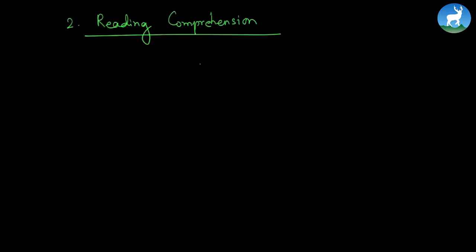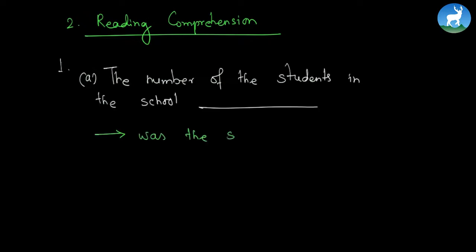Now let us go to the reading comprehension part. The first question is: the number of students in the school — the options are changed rapidly, changed only in a few years, or was the same all years. Looking at the graph, the answer is the total number of students was always constant — the same in all years.